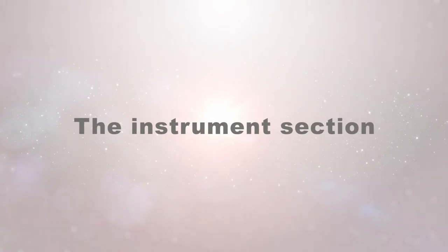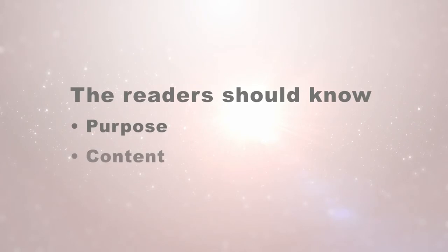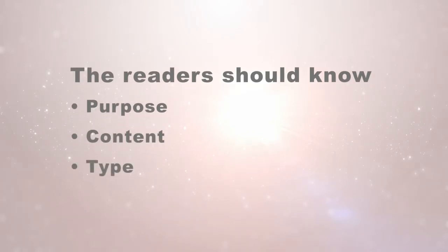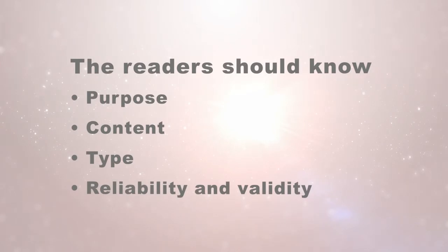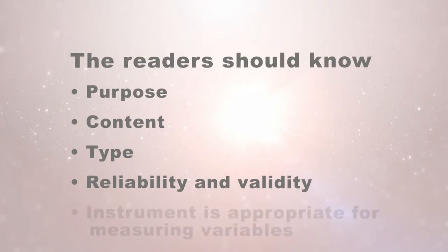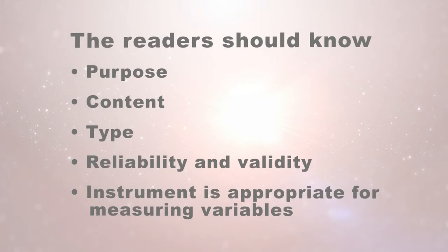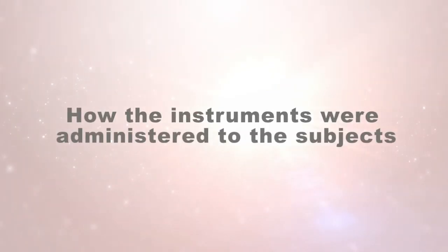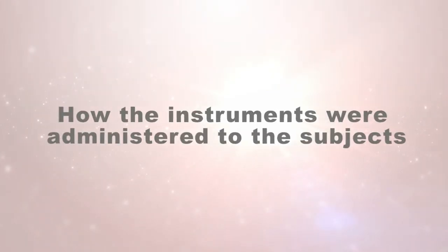The next step is to look at the instrument section of the paper. Are the instruments described adequately? The author should describe the purpose of the instrument, the content, and the type of instrument. Information should be provided about the reliability and validity of the instrument. As a reviewer, ensure that the instruments are appropriate to measure the variables in the research questions, and that the author clearly describes how the instrument was administered — whether it was a survey, interview, or other procedure.